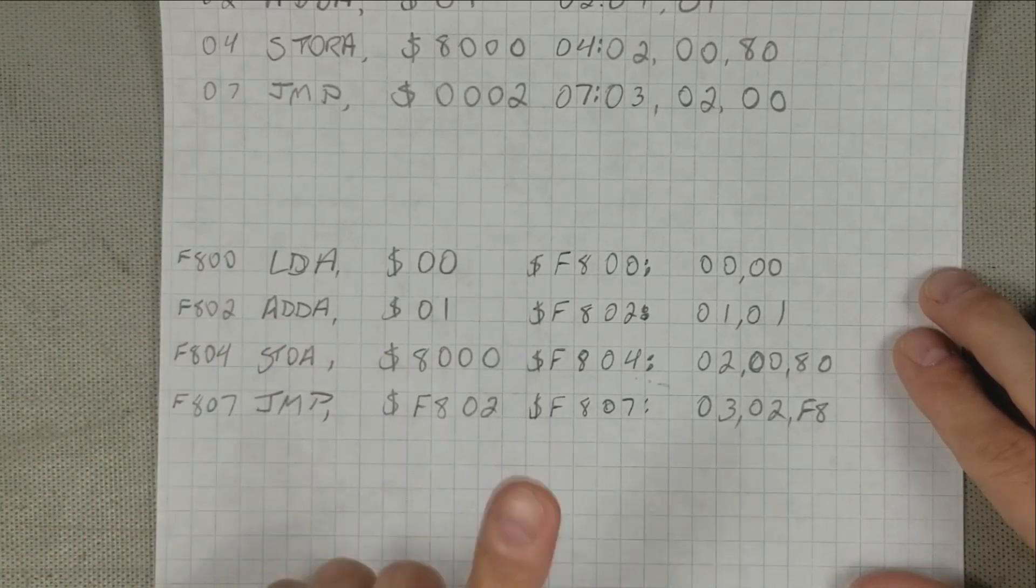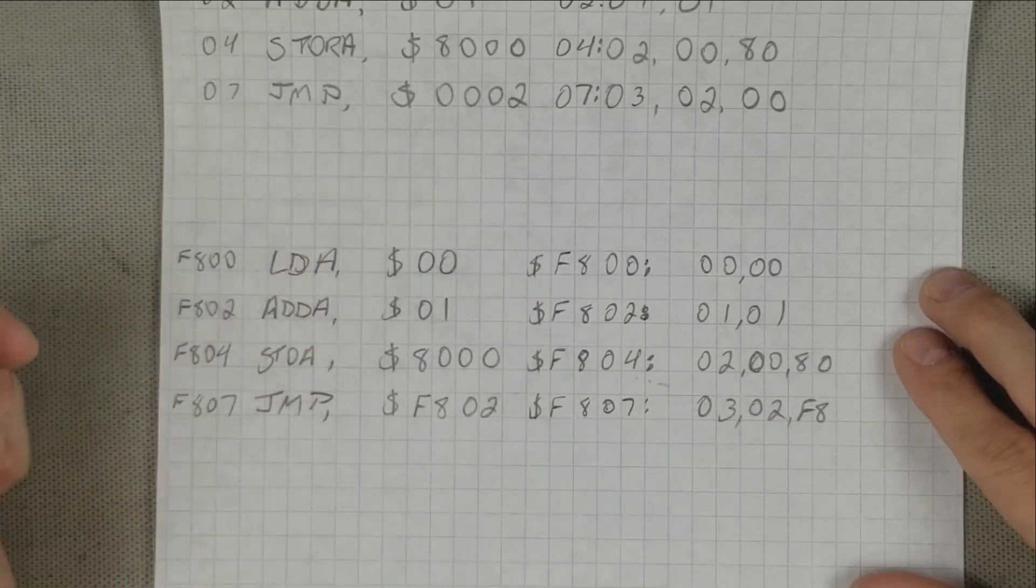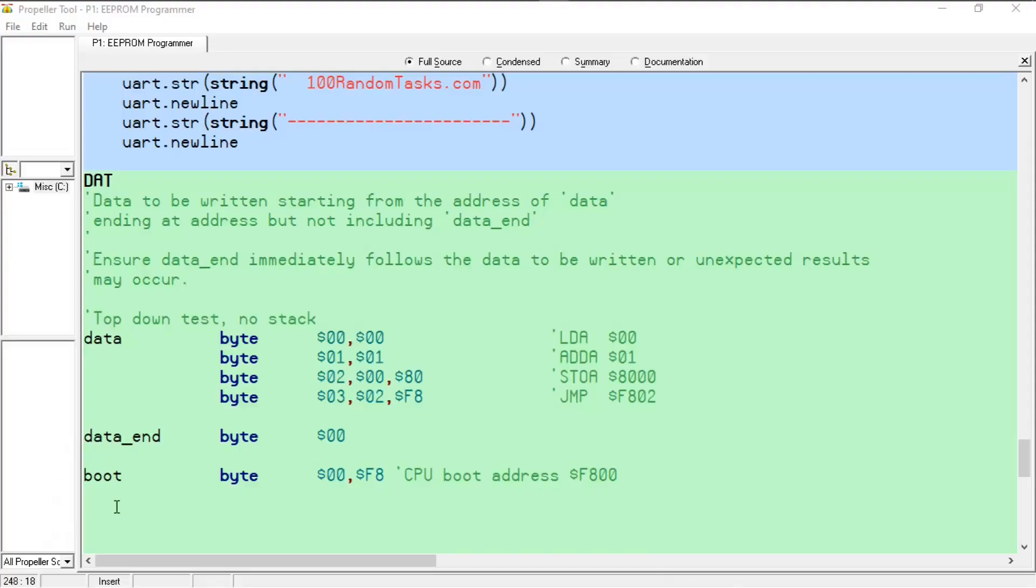With the altered program, we can now program the ROM and see if it works. Here I have the Propeller Programmer from a previous video, and if you want to check that video out, I'll leave a link in the description. At the bottom is where the program data is stored, which will be programmed starting at address 0 of the ROM. At the very bottom is a line with the heading boot. These are the two bytes which will be written to the top of the ROM, which will be at addresses FFFE and FFFF, as I've said before, which holds the address where the program starts. In this case, it's F800.